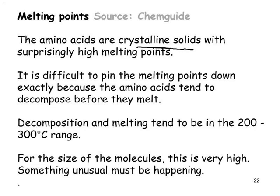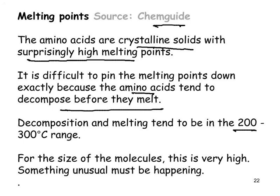Amino acids are crystalline solids with surprisingly high melting points. It is difficult to pin down their exact melting points because, according to Chemguide, they decompose before they actually melt. In general terms, most amino acids are considered to melt at around 200 to 300°C. For the size of the molecules, this is a high melting point, so something unusual is happening. Let's see what we think it is.